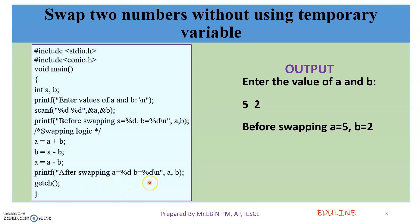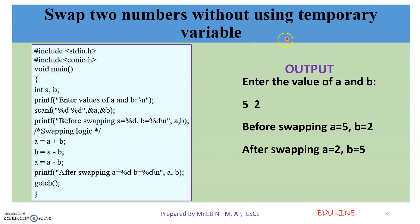After swapping, A is equal to 2 and B is equal to 5. The values have been successfully swapped. In this logic, there is no temporary variable needed at all.